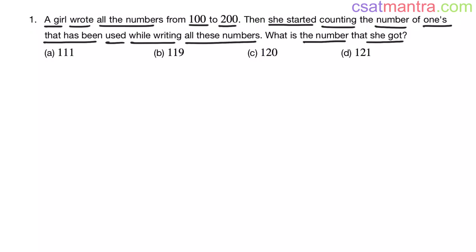We want number of 1s in writing the numbers from 100 to 200. See, 200 does not have any 1. So just eliminate this. Now we have the numbers from 100 to 199. Now from 100, 101 up to 109, each number has one 1, and then 101 has one more 1. So in total how many 1s? 10 plus 1, that's 11.